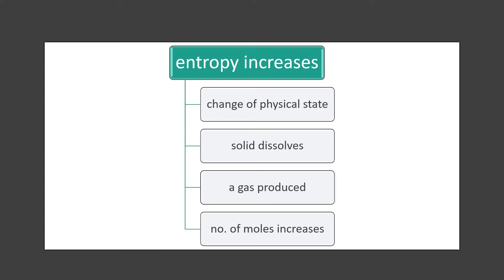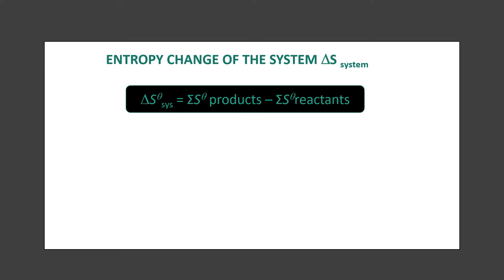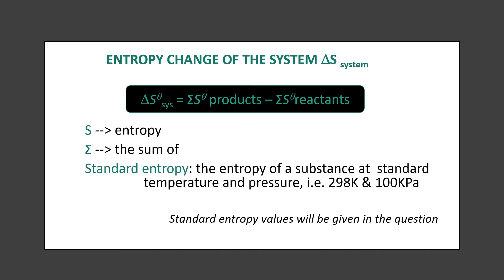Now let's try another way of working out what happens to the entropy of the system — this time in terms of numbers. To calculate the entropy change of the system, the expression we use is: ΔS(system) = Σ(molar entropies of products) − Σ(molar entropies of reactants). The S represents entropy and the sigma symbol means you will be adding up the values. The standard entropy refers to the entropy of a substance at standard temperature and pressure, which is 298 K and 100 kPa. The standard entropy values will be given in the question; however, this formula is one you have to remember, as it will not be given in the question or in your exams.